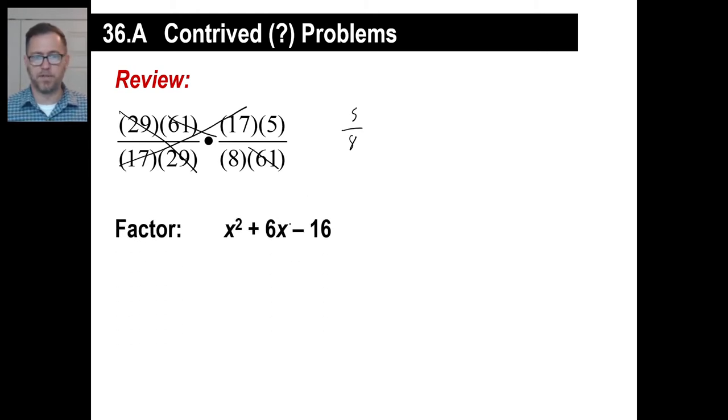Look at this second one. What do we do with this? Remember how to factor that one? X and X, right? I multiply, give me negative 15. So it's, excuse me, 16. So it's a positive and negative. Add to give me positive 6. Must be a positive 8 and a negative 2. Got that, right? Piece of cake.